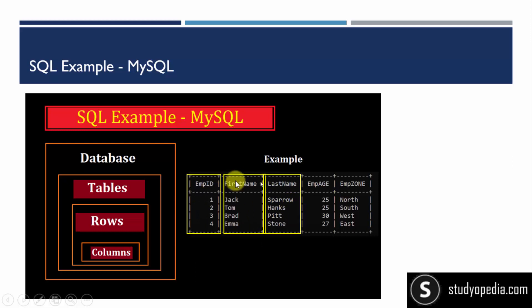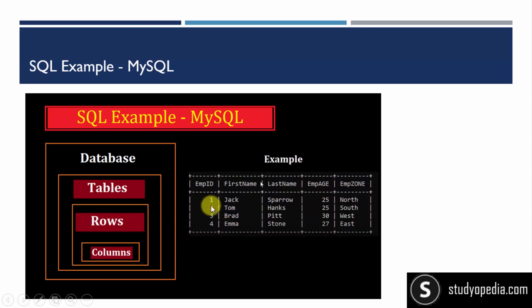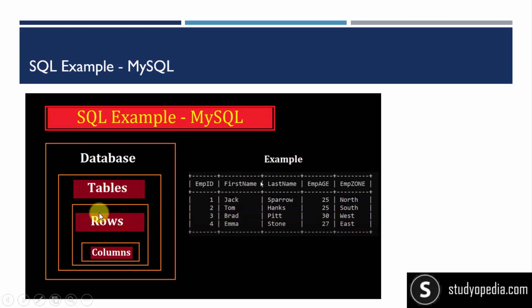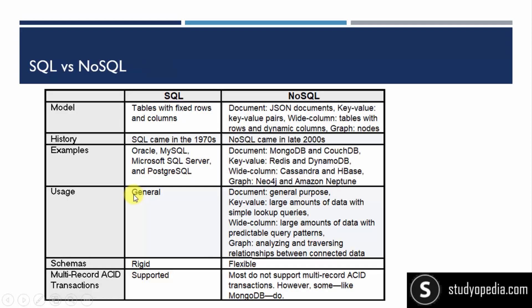These are our columns: employee ID, first name, last name, employee age, and employee zone — five columns. And these four are rows. Tables have rows and columns, and a database is a collection of tables. This is what we call SQL — tables with fixed rows and columns, which is the relational model.